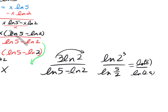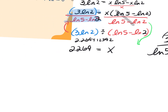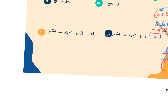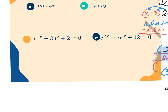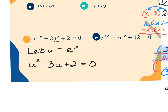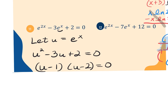The next two examples use U-substitution. For number 11, I'm going to let U equal the middle term — just E to the X, not the 3. So U represents E to the X. When I factor, this becomes U squared minus 3U plus 2 equals 0. I need factors of 2 that add to give me negative 3, and those are negative 1 and negative 2.